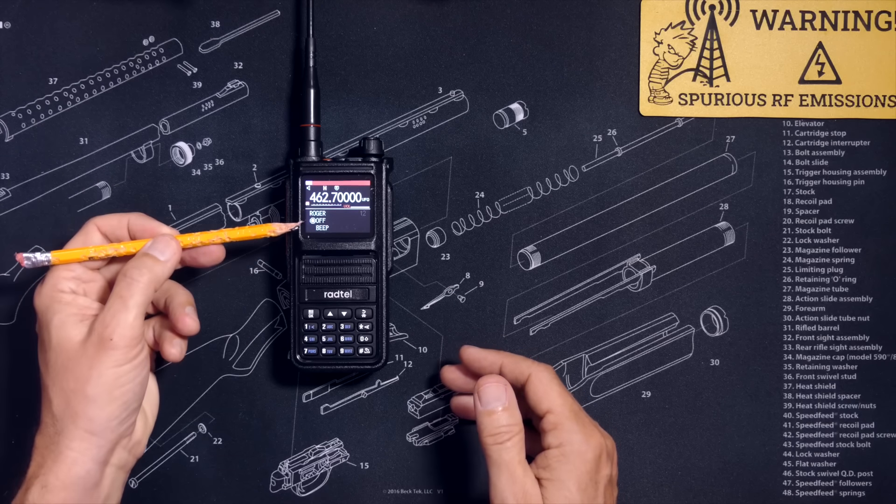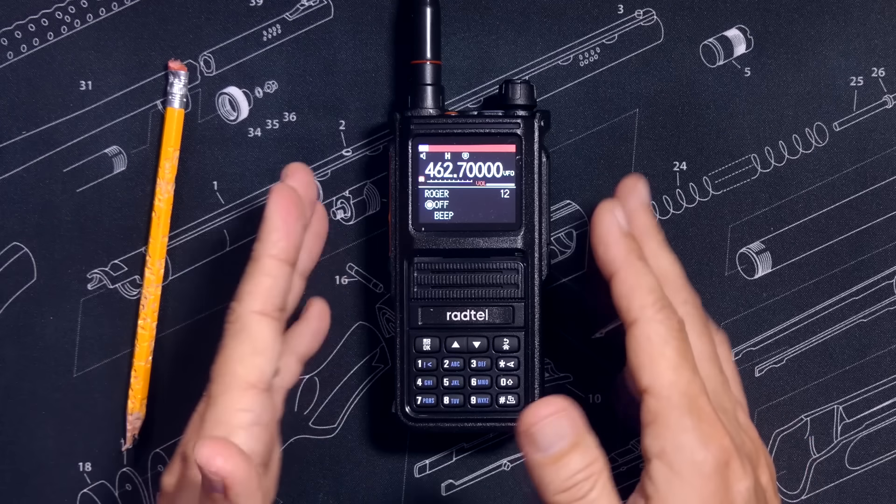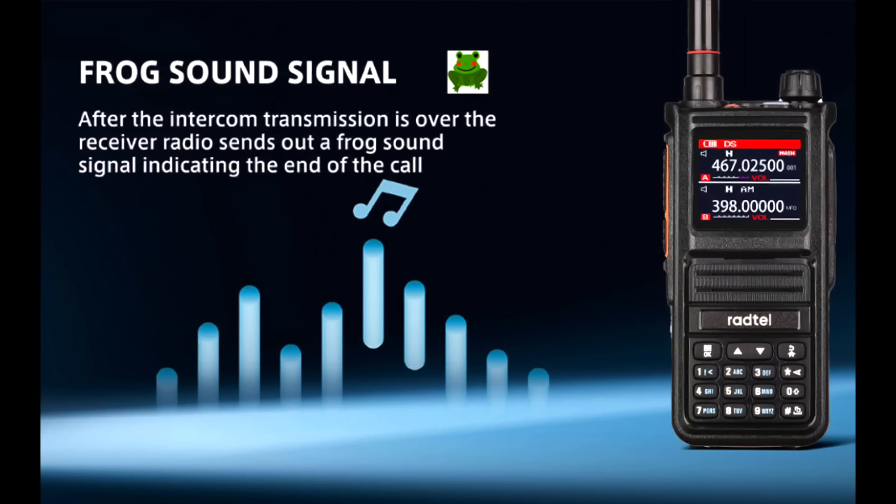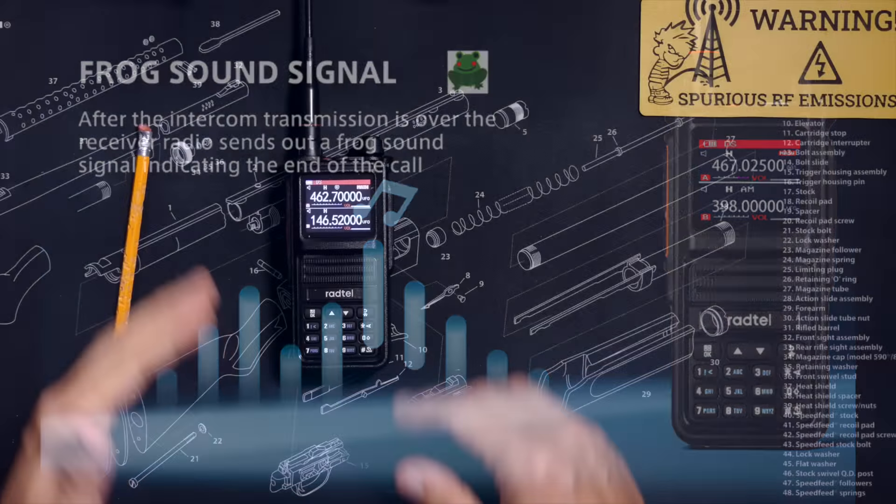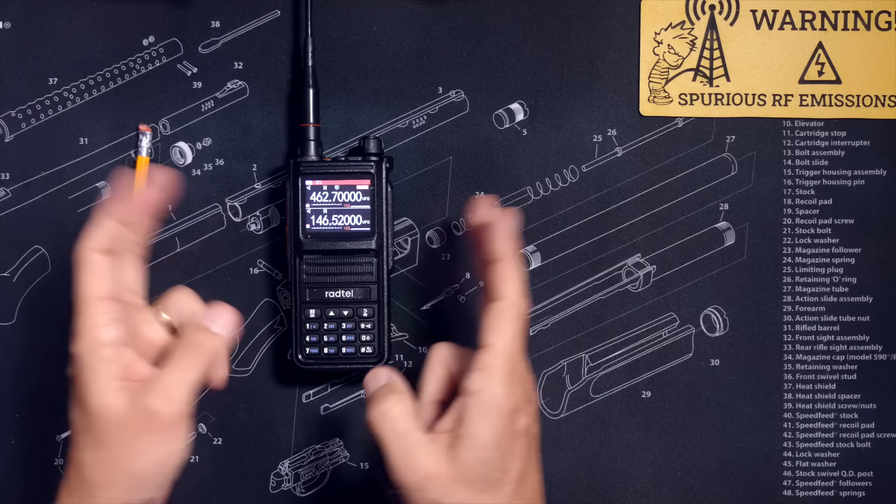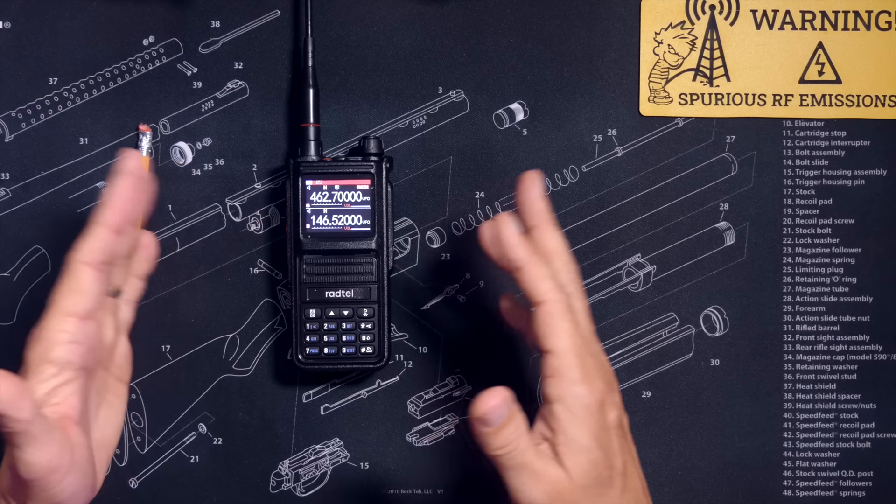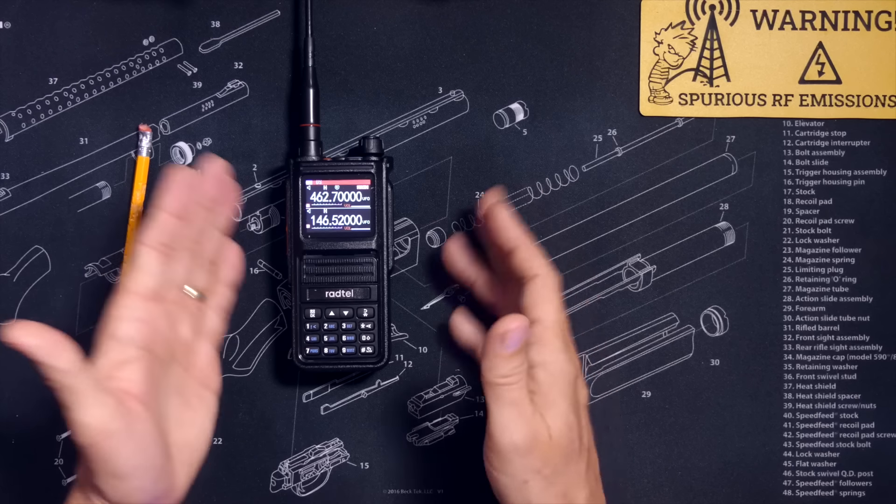And not only does this radio have a Roger beep, but this radio also has what Radtel calls the frog tone, which sounds like a fake MDC tone. However, be aware that there is no side tone. This means that when transmitting, you will not hear the Roger beep or the frog tone. Only the people receiving your transmission will experience the joy of your Roger beep or frog tone.